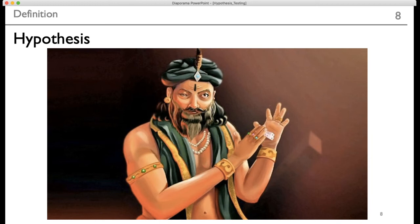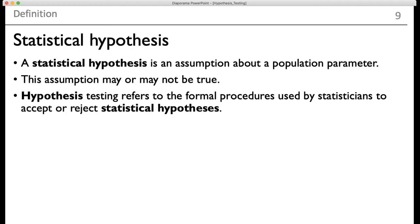Let us come to the definition of the hypothesis. A statistical hypothesis is an assumption about a population parameter. When I say population parameter, remember that the normal distribution had population parameters: the mean mu and sigma. This assumption about the population parameter may or may not be true.